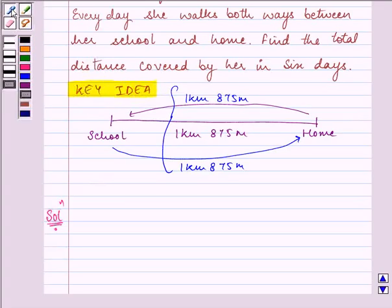Because we need to understand that in a day she isn't walking 1 kilometer 875 meters once, but she is walking twice. So the distance covered by her